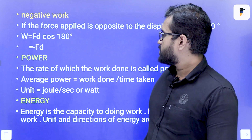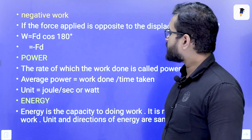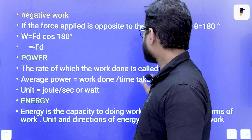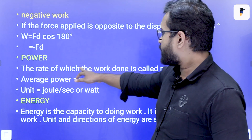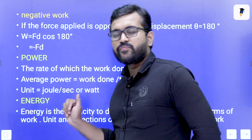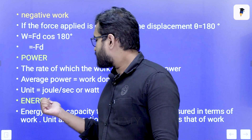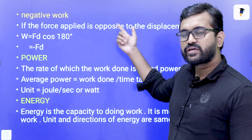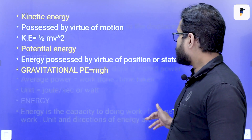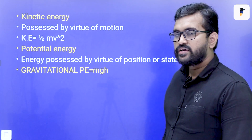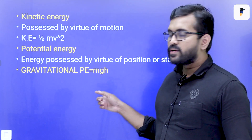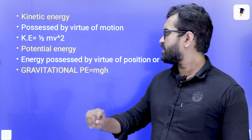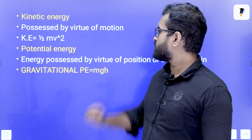This is power. The rate at which work is done is called power. Average power is equal to work done per time taken. The kinetic energy equation is half mv squared, and potential energy is mgh. So we have both potential energy and kinetic energy.